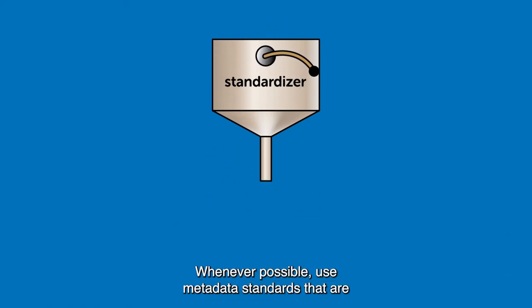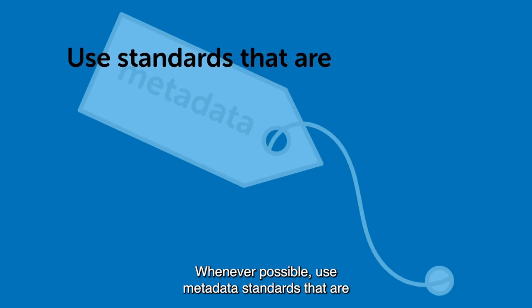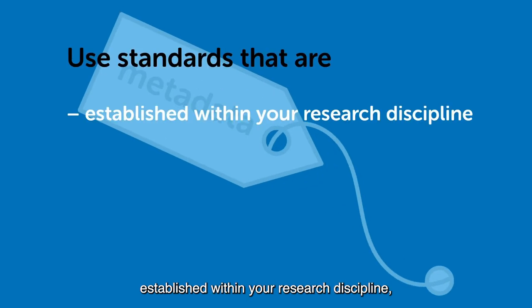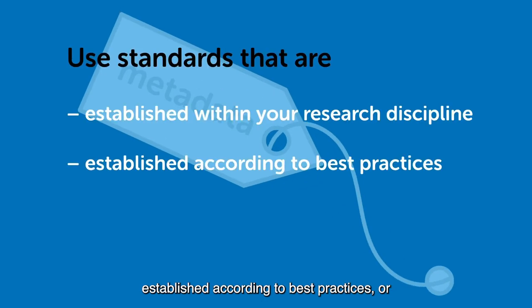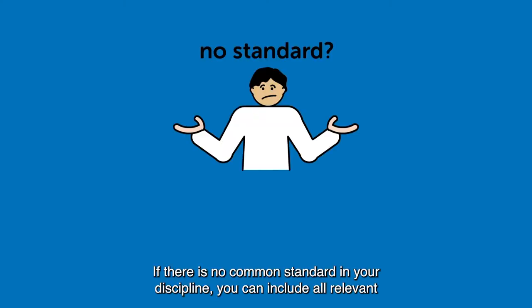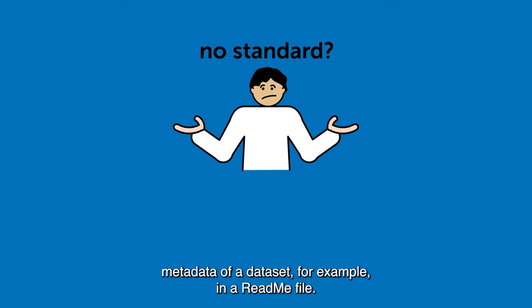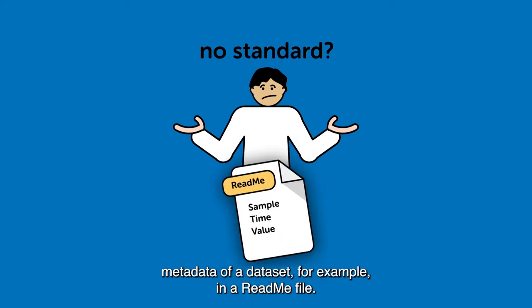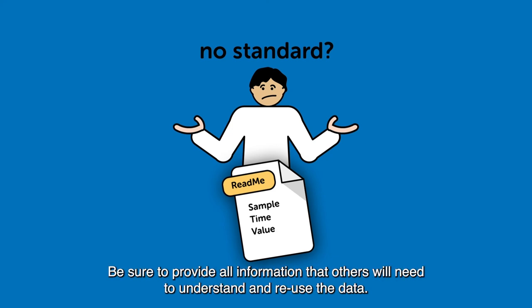Whenever possible, use metadata standards that are established within your research discipline, established according to best practices, or commonly accepted and used by your research community. If there is no common standard in your discipline, you can include all relevant metadata of a dataset, for example, in a readme file, and be sure to provide all information that others will need to understand and reuse the data.